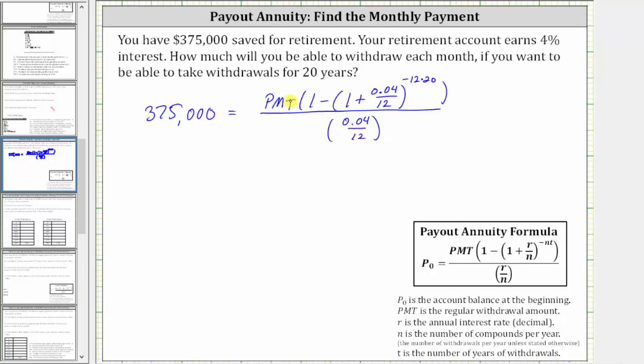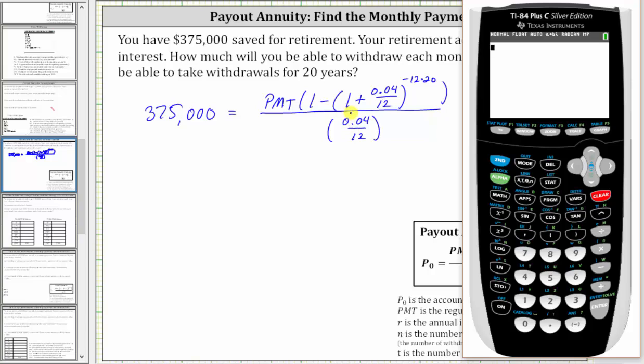And now we need to solve this equation for PMT, which is the regular withdrawal amount. To do this, we will begin by evaluating this fraction on the graphing calculator. We enter this quotient just like it looks: open parenthesis, one minus, open parenthesis, one plus 0.04 divided by 12, closed parenthesis.